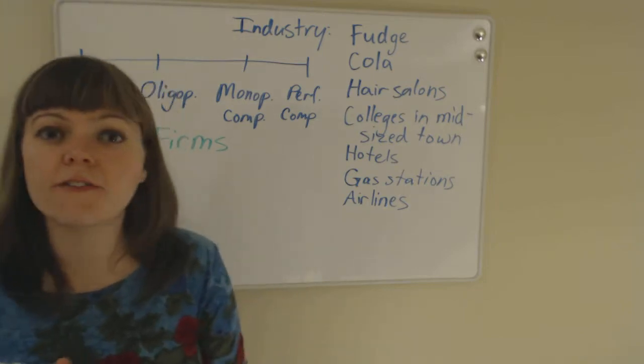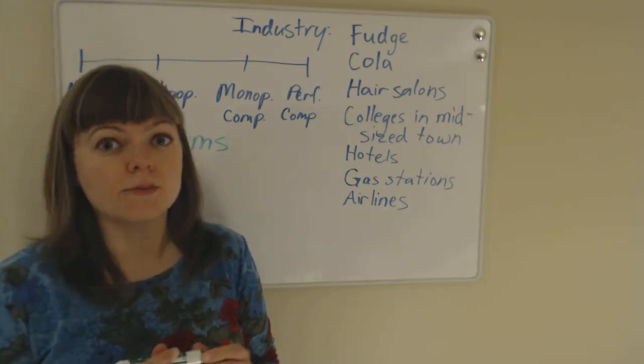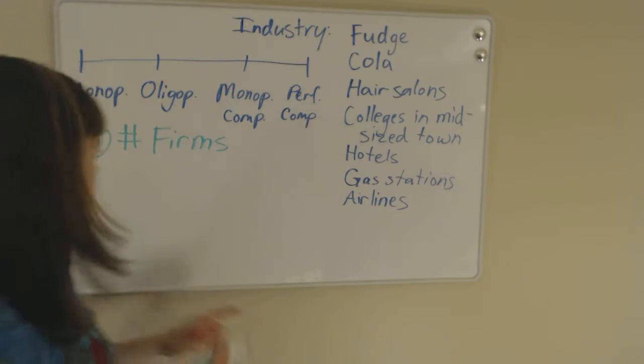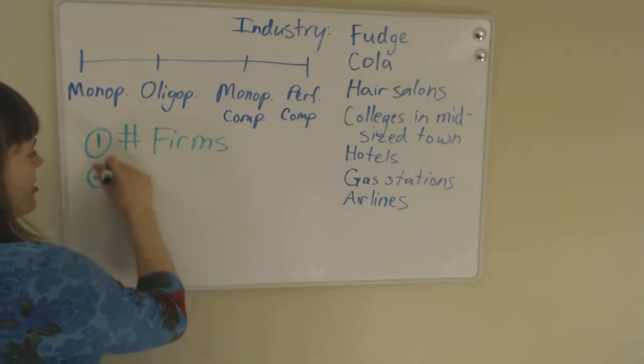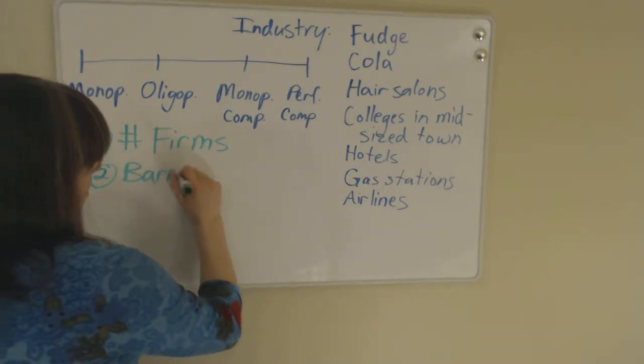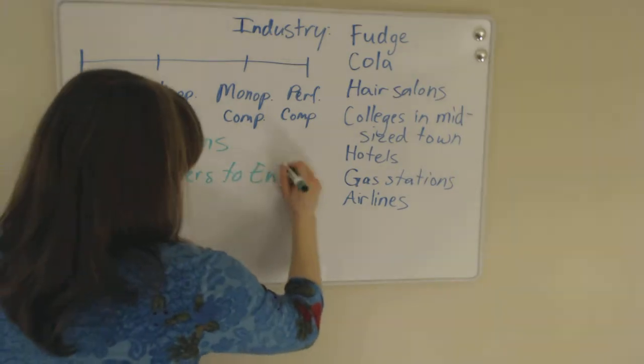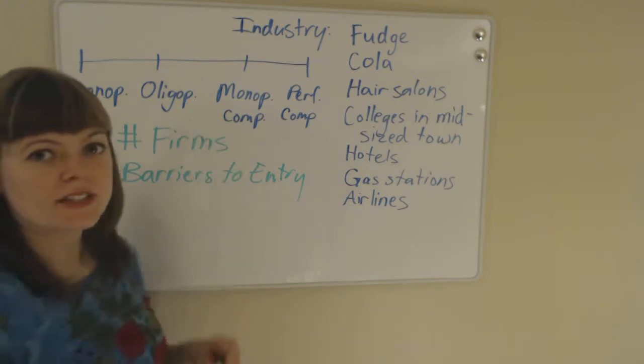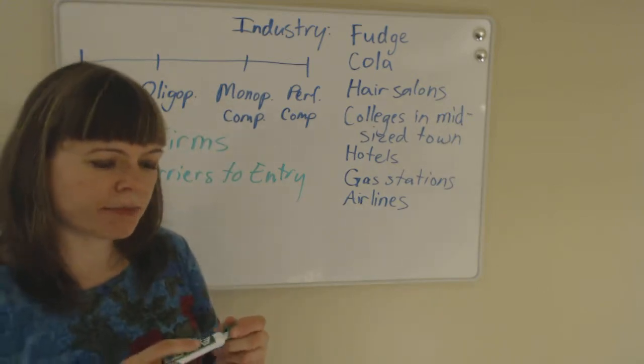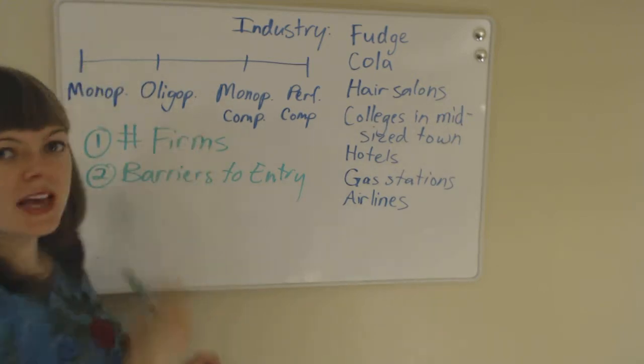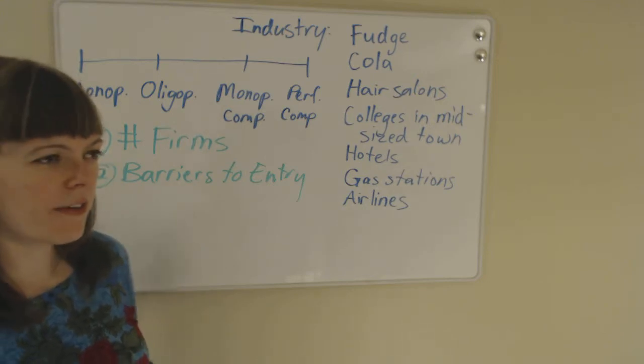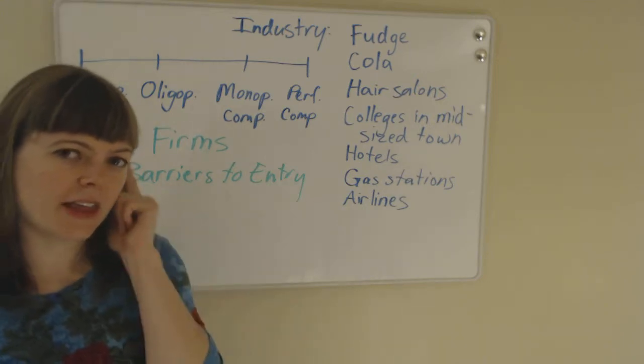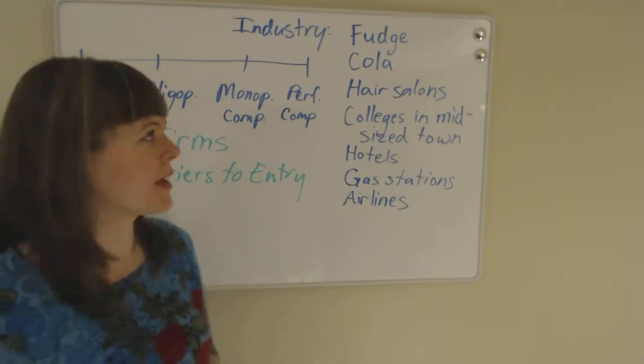And if it is an oligopoly, or if there are only a few firms, we need to ask ourselves, what are the barriers to entry? Because that's one of the main differences between oligopoly and monopolistic competition, is that there's some sort of barriers to new firms entering an oligopoly. So if there's only a few firms, we need to think as our next step about what those barriers might be.